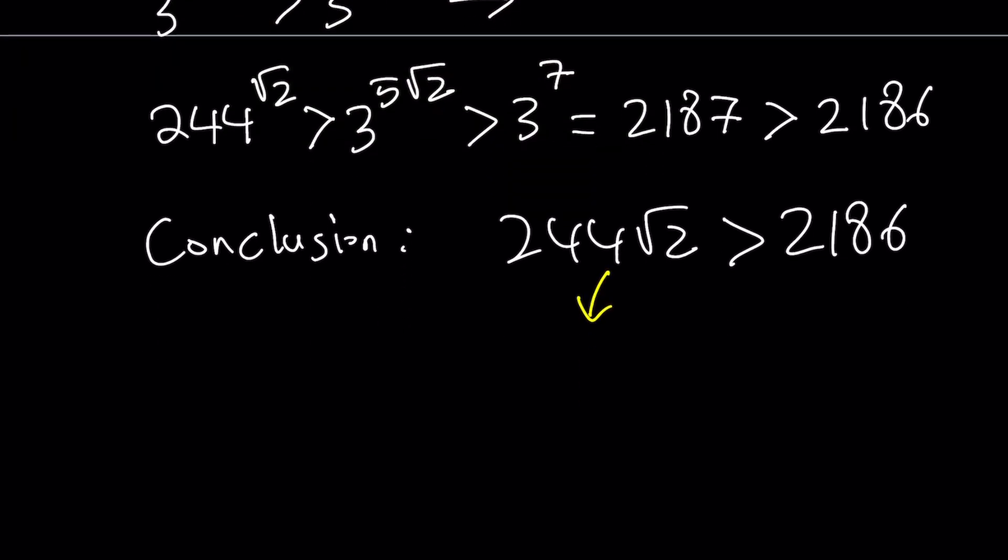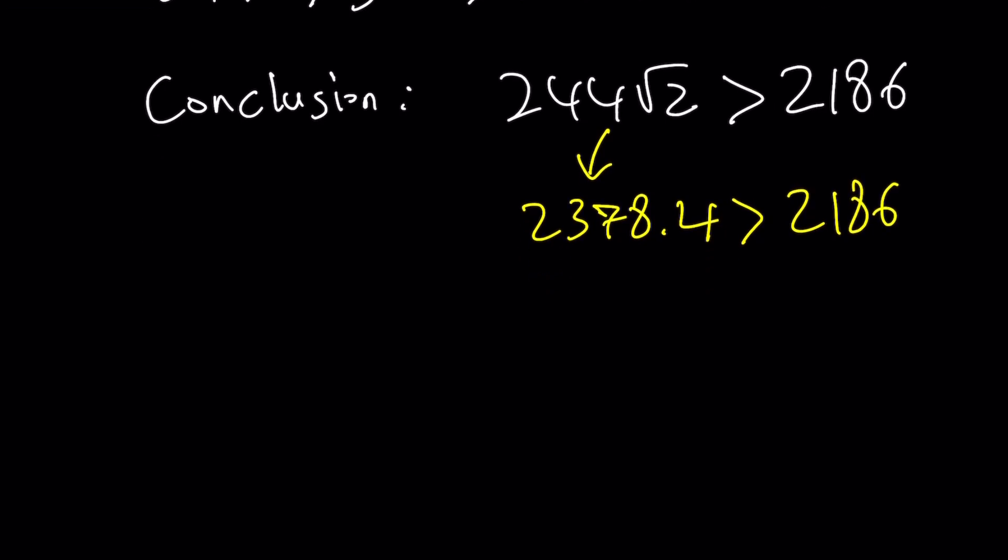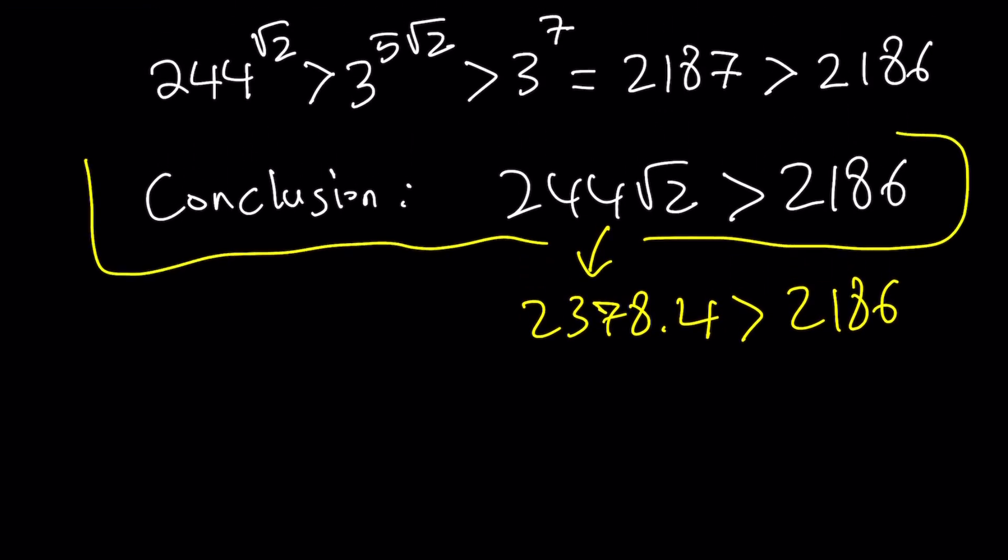And in fact, if you look at the numerical values here, 244 times root 2 is about 2,378.4. And obviously, that is greater than 2,186. And this brings us to the end of this video.